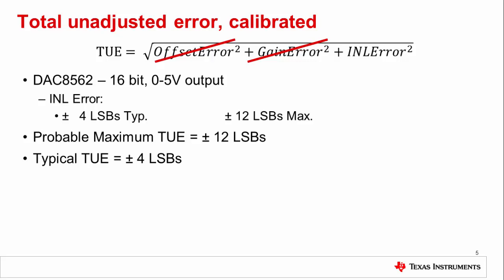Keep in mind that this method may introduce about half of an LSB of offset error because of rounding in the adjusted code calculations. That said, the gains from calibrating are generally well worth the cost based on the TUE reduction shown here.